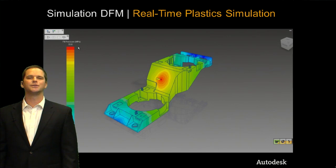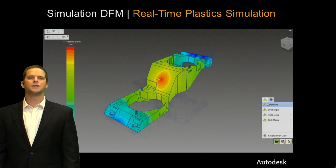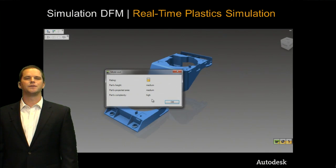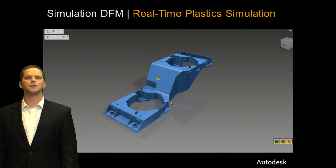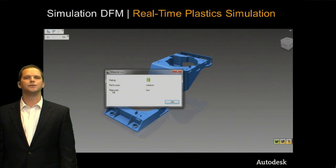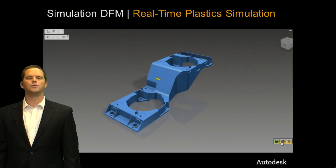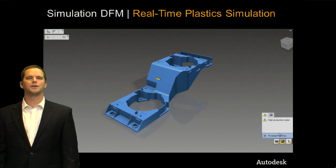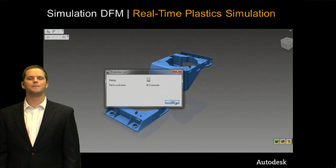There are still two more indicators we haven't touched yet. For cost, we have three factors. Mold cost is influenced by the overall size of the part as well as the complexity — for example, the more undercut features it detects, the higher the cost is going to be. Material cost is a relative indicator based on the material you've selected, and you can change the defaults in the iProperties dialog. Finally, production cost is completely based on cycle time, and the biggest factor in cycle time is usually the cooling time. So things like making the part thinner will help reduce that cycle time and reduce that cost.